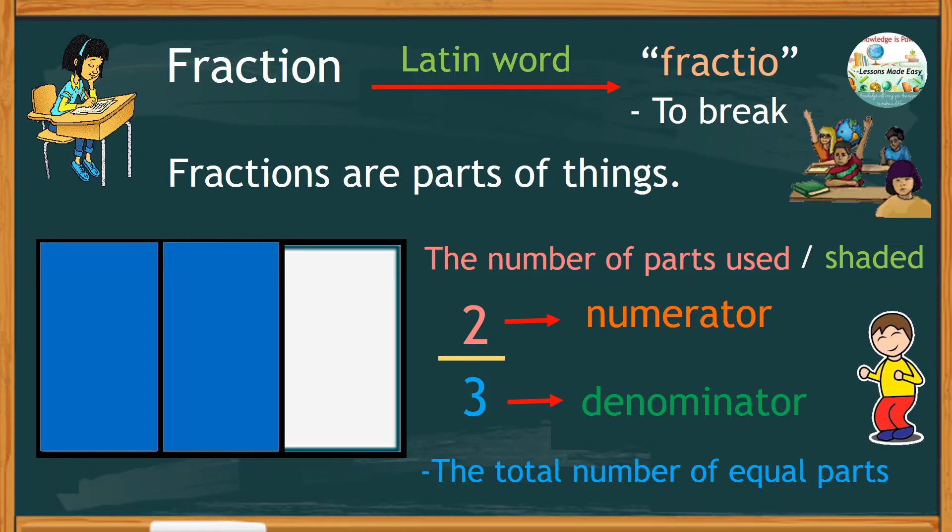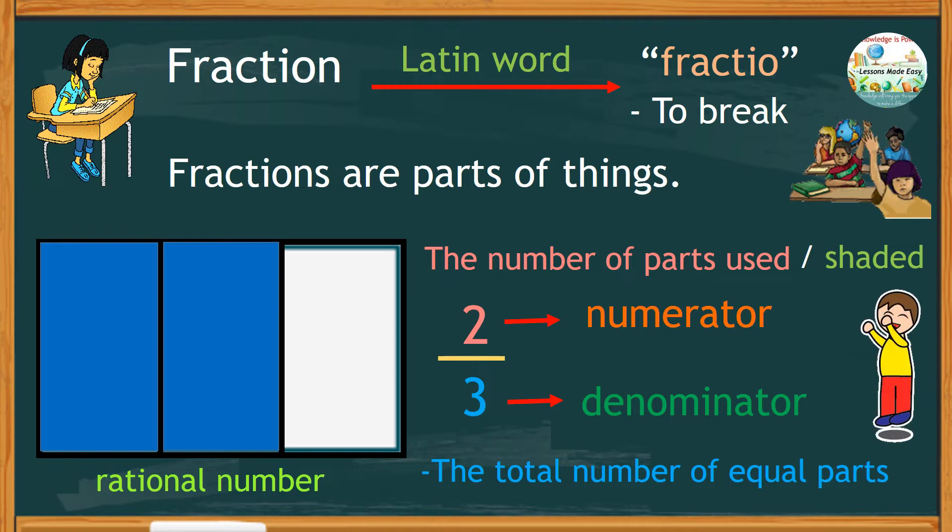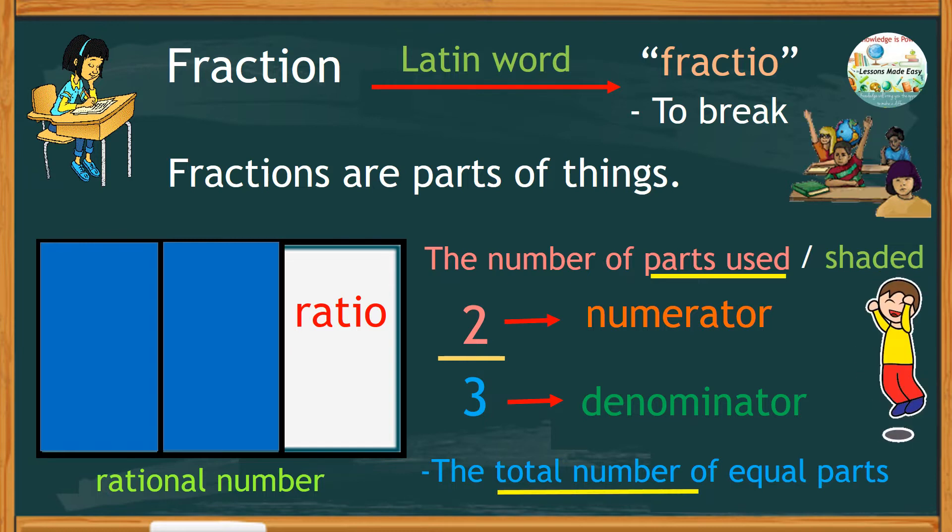A fraction is also a rational number. It means that a fraction can be expressed as the ratio of the number of parts used to the total number of equal parts. So, which is two is to three.